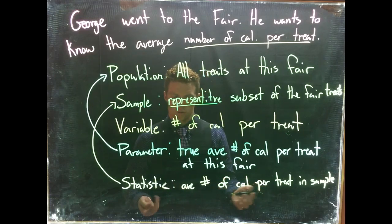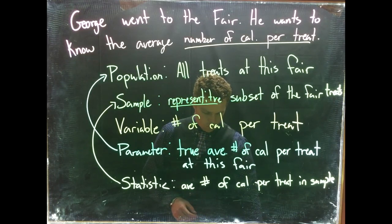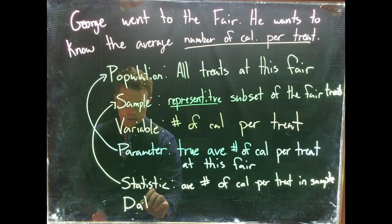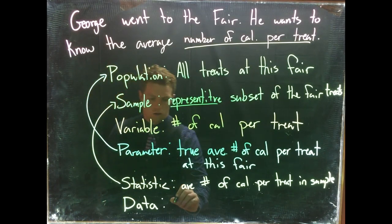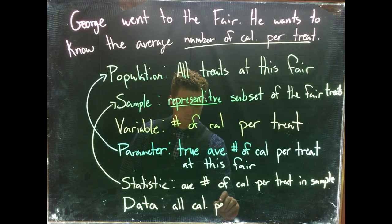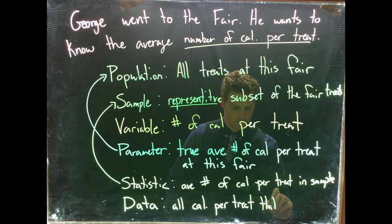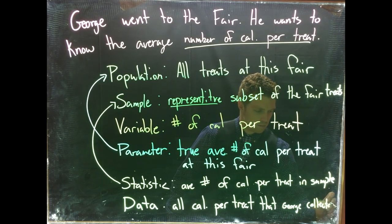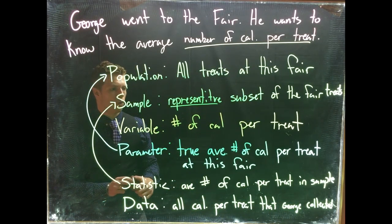The statistic here would be the average number of calories per treat in the sample. This statistic is referring specifically to the sample — that's how we would calculate this actual number. The last thing we want to make sure we know is what would the data be in this example. The data would be all the calorie counts per treat that George collected — just the list of everything George collected for each treat.